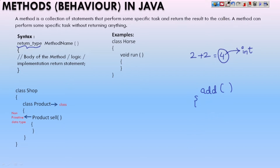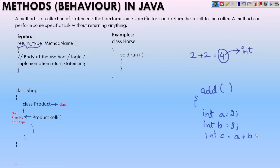Here I am going to write the logic: int a equals two, int b equals three, int c equals a plus b, return c. So this is one small method that I have written. It is returning c. The data type of c is int, so int is going to be the return type of this particular method. You write the return type and then the implementation. A method is a collection of statements that perform specific tasks and return the result to the caller.